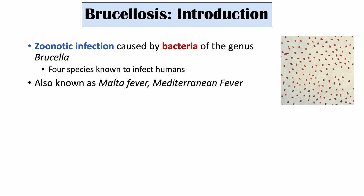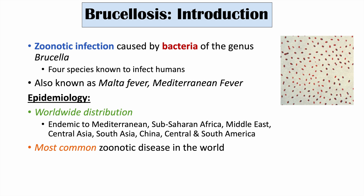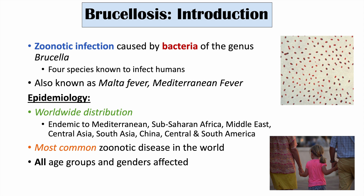What is the epidemiology of brucellosis? This is a worldwide infection with worldwide distribution. We can see it being endemic — meaning it is just present — in the Mediterranean, Sub-Saharan Africa, the Middle East, Central Asia, South Asia, China, and Central and South America. It is actually the most common zoonotic disease in the world, and all age groups and genders are affected equally.